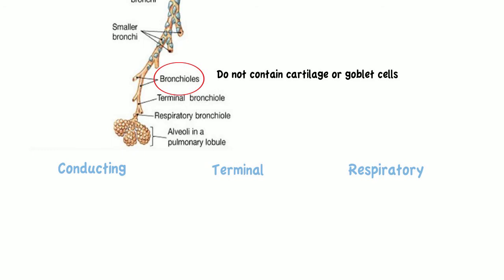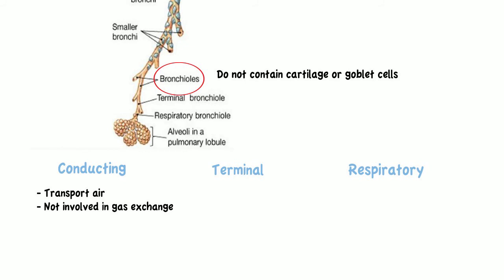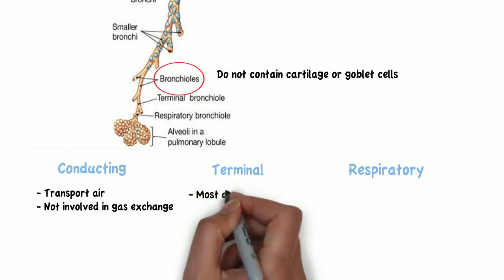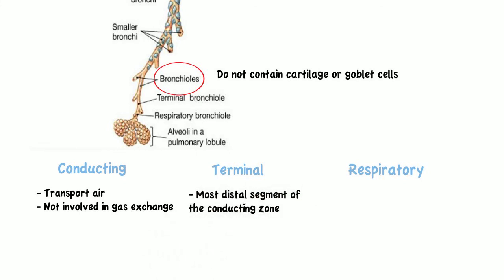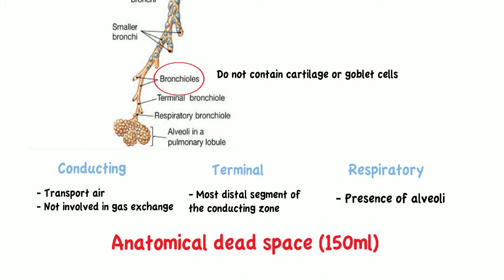Conducting bronchioles, as the name implies, transport air and are not involved in gas exchange. They eventually lead to terminal bronchioles, which are the most distal segment of the conducting zone. Terminal bronchioles further divide into respiratory bronchioles, which are distinguished by the presence of alveoli. The conducting airways are also referred to as the anatomical dead space, as they do not participate in gas exchange.